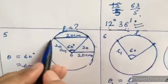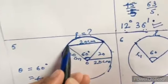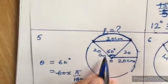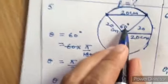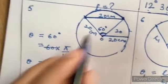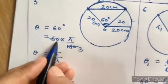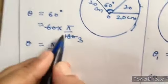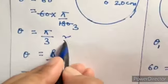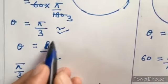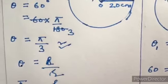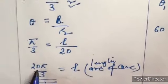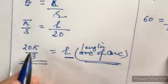The length of arc L equals theta times r. The formula is the same. But theta is given in degrees, so we convert to radians: theta equals 60 degrees, multiplied by π/180, giving π/3. So theta equals π/3. The length of arc is equal to 20 × π/3, that is 20π/3.